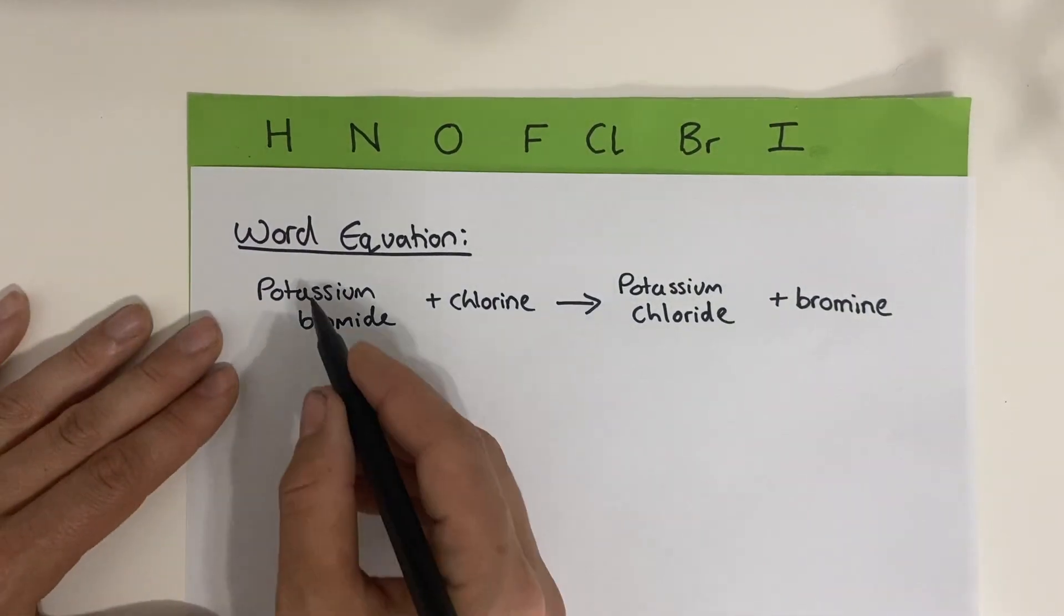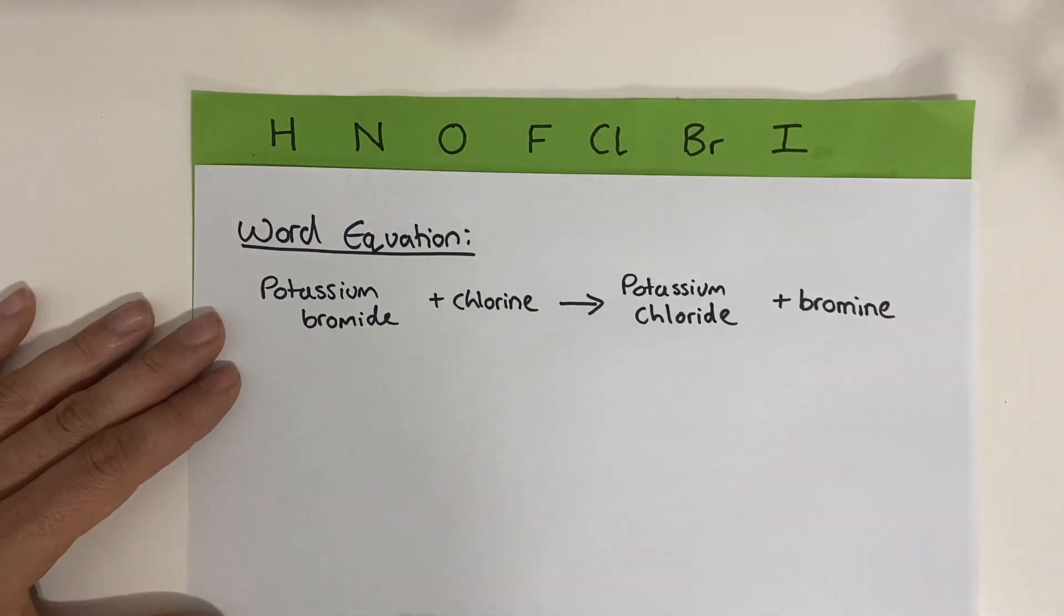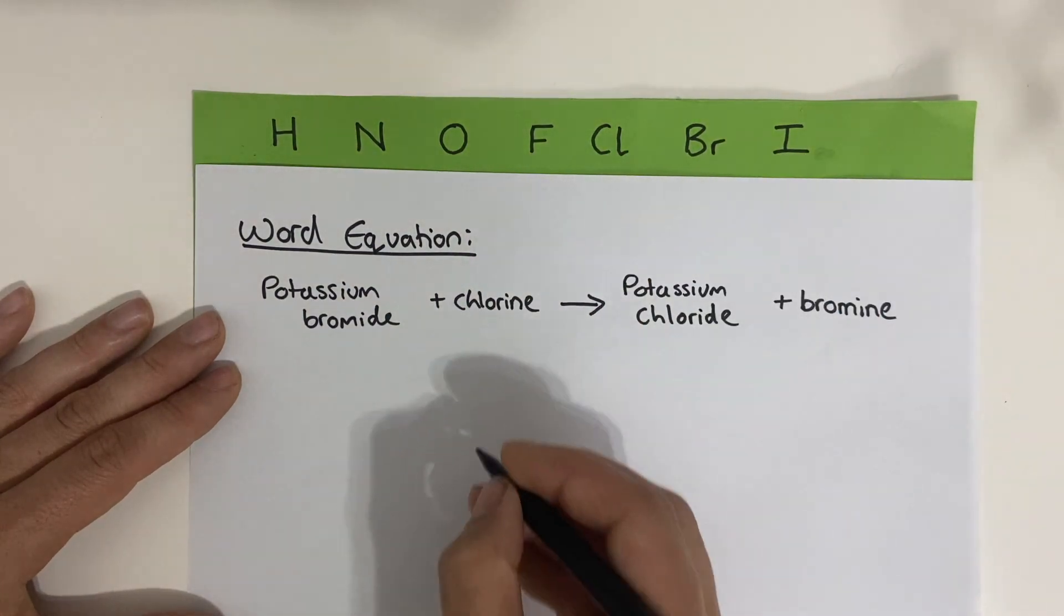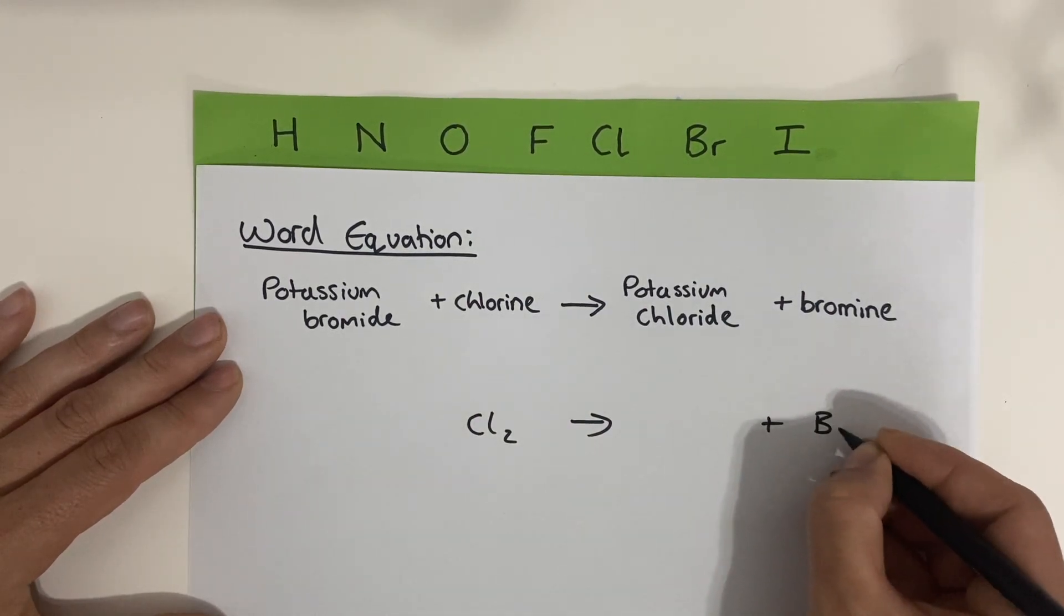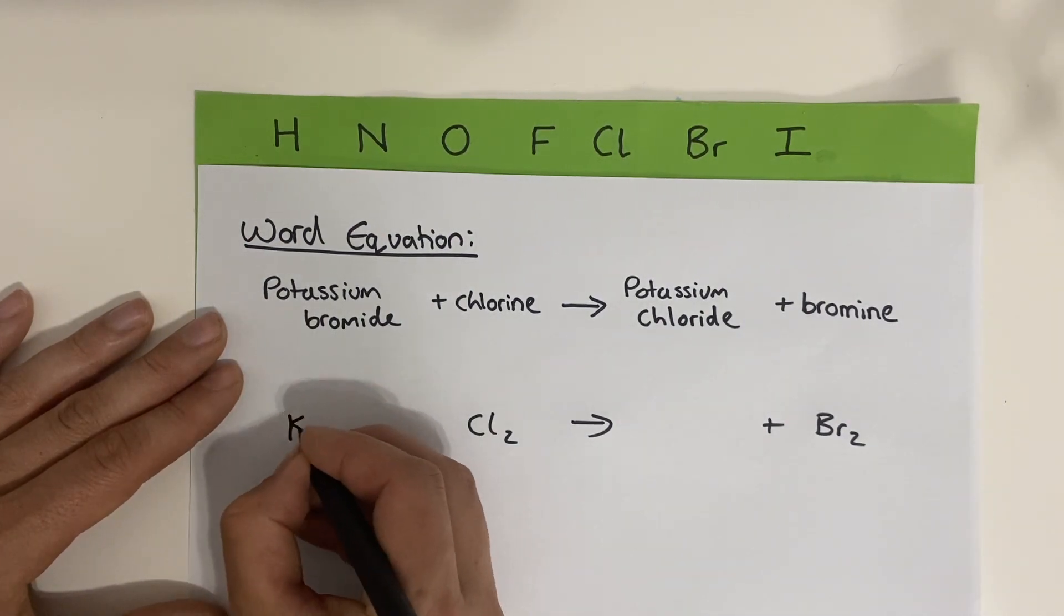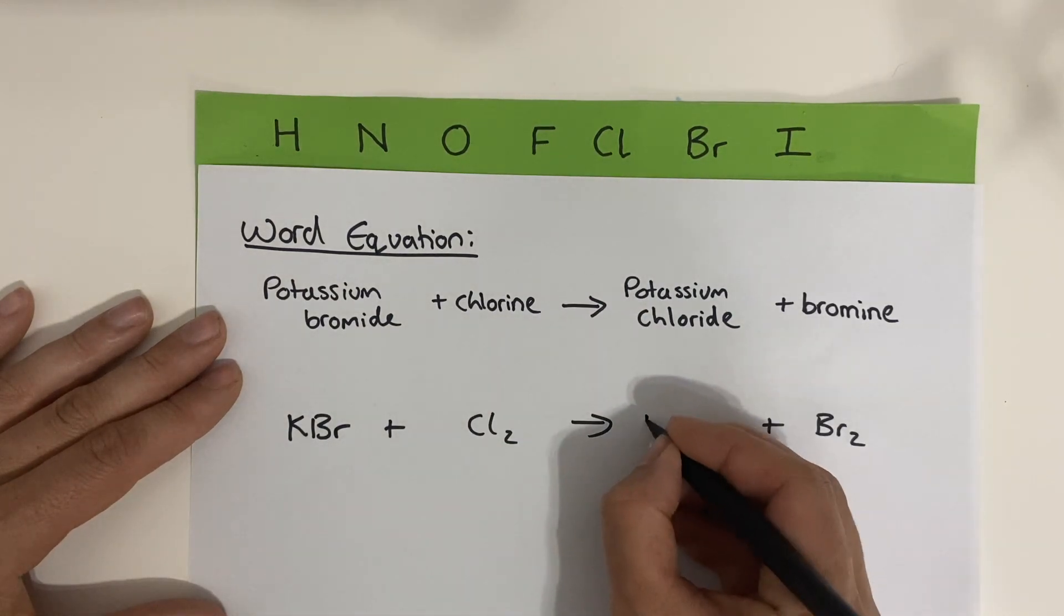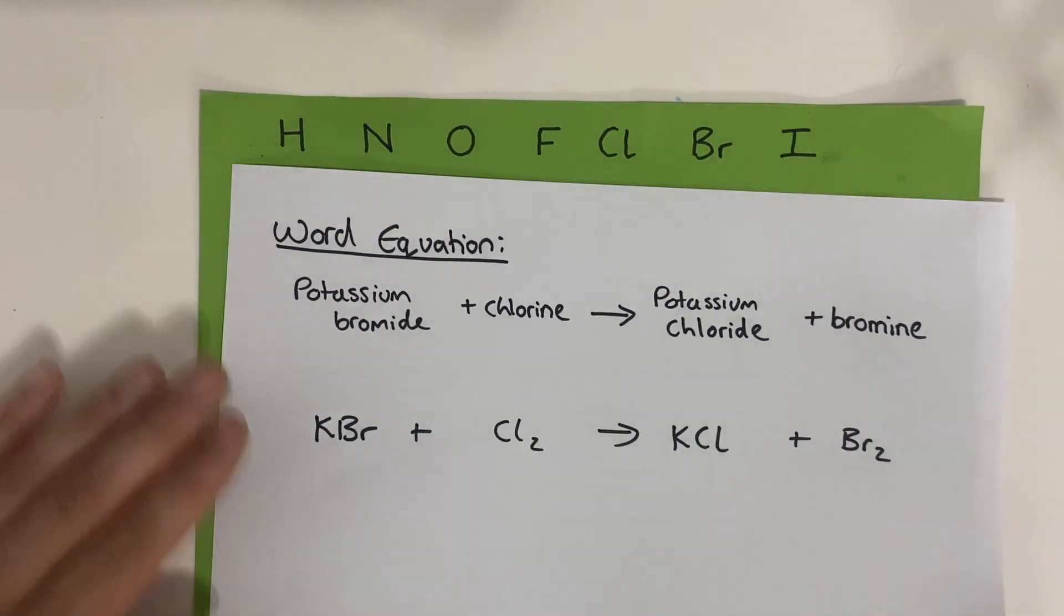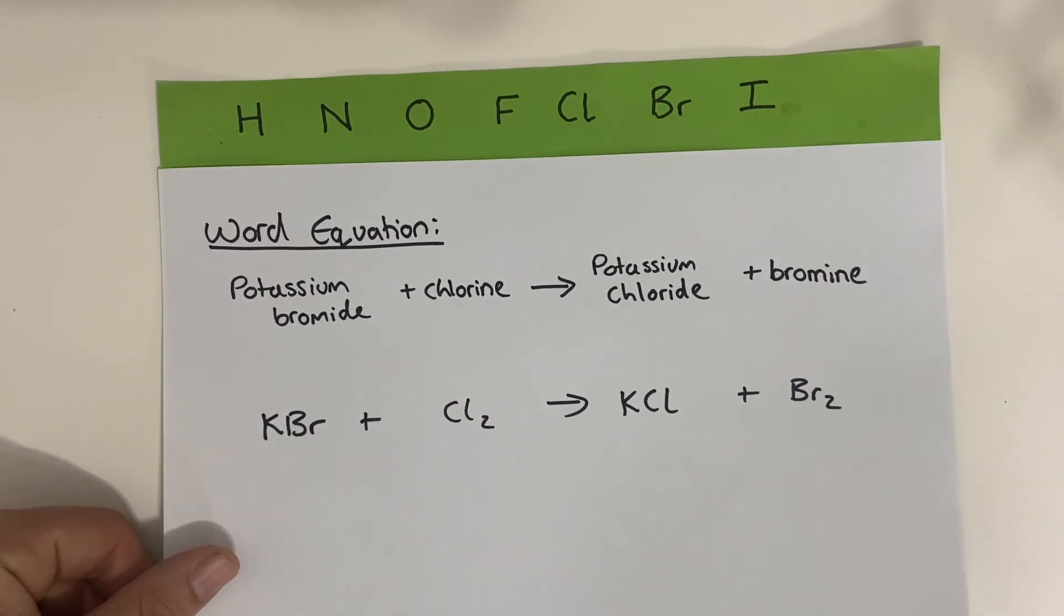Last one. Potassium bromide plus chlorine forms potassium chloride plus bromine. It's a displacement reaction. The elements are chlorine and bromine and they're both diatomic. So I can write Cl2 and Br2. Potassium bromide, use your table of ions. Potassium bromide is KBr. Potassium chloride, use your table of ions. It's KCl. Have a go at a few yourself and then attempt the next video where I'll show you how to balance the symbol equations.